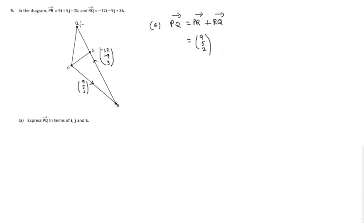RQ is negative 12, negative 9, 3. So adding these up, we just add the corresponding x components: 9 plus negative 12 is negative 3. Corresponding y components: 5 plus negative 9 is negative 4. Corresponding z components: 2 plus 3 is 5.